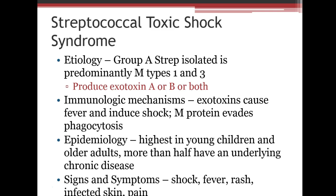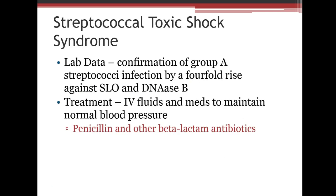Another complication is streptococcal toxic shock syndrome. This produces exotoxin A or B, which can cause fever and induce shock, while the M protein evades phagocytosis. It's most often seen in young children and sometimes older adults, with symptoms including shock, fever, rash, or infected skin and pain. It is confirmed with a group A strep test, antistreptolysin O, and DNase B testing. Treatment typically involves penicillin or other beta-lactam antibiotics.